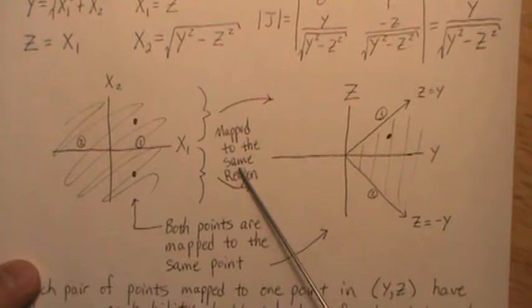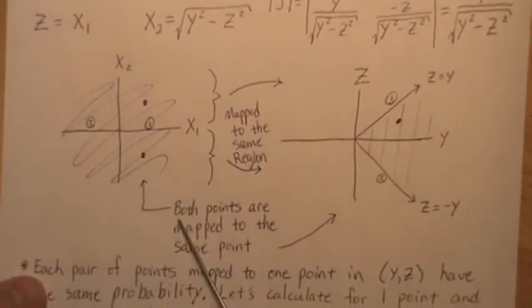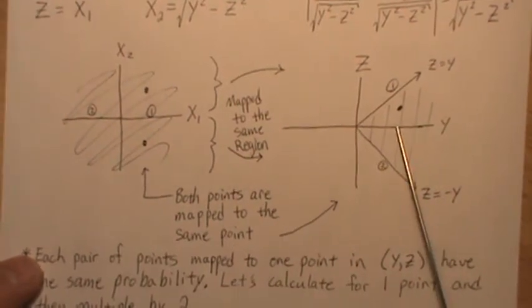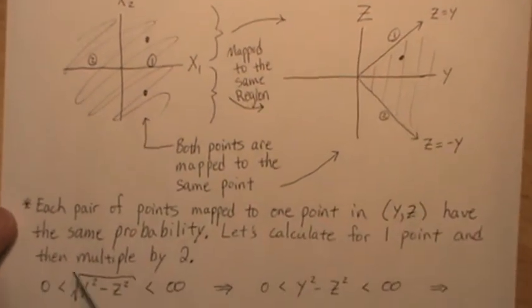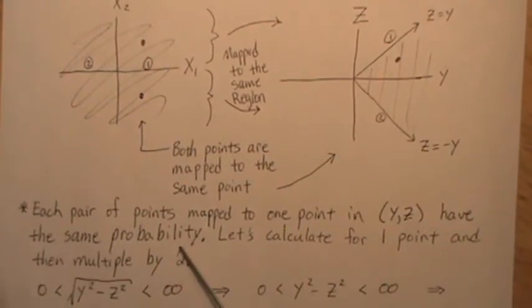So technically, we only need to find this mapping and then just multiply every point times two because it's the same exact down here. So this is mapped to the same region as this, so it's not one-to-one. Both points are mapped to the same point. Each pair of points mapped to one point in YZ have the same probability.